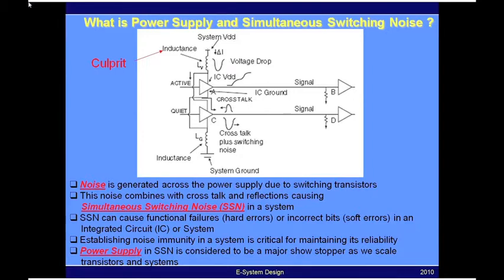So every time the circuit switches, because of these parasitics, you generate noise between the VDD and the ground nodes of the transistor-level circuit. And this is what we call power supply noise.